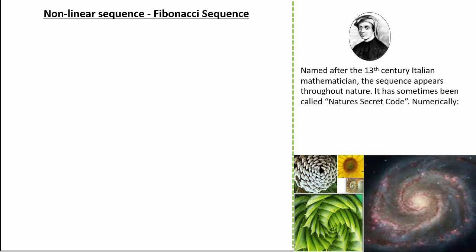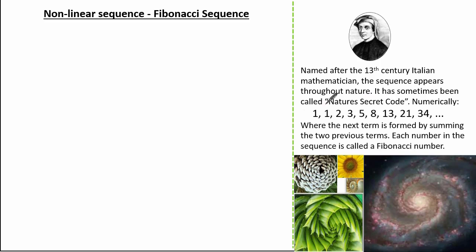The sequence is named after the 13th century Italian mathematician, and the sequence appears throughout nature. It's sometimes called nature's secret code. Numerically it's 1, 1, 2, 3, 5, 8, 13, 21, 34, and so on and so forth, where the next term is formed by summing the two previous terms. Each number in the sequence is called a Fibonacci number.